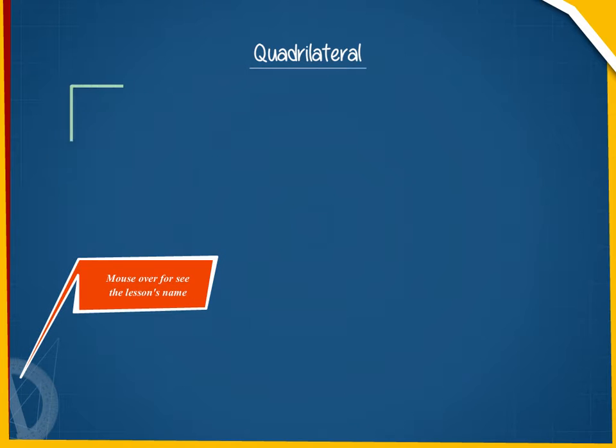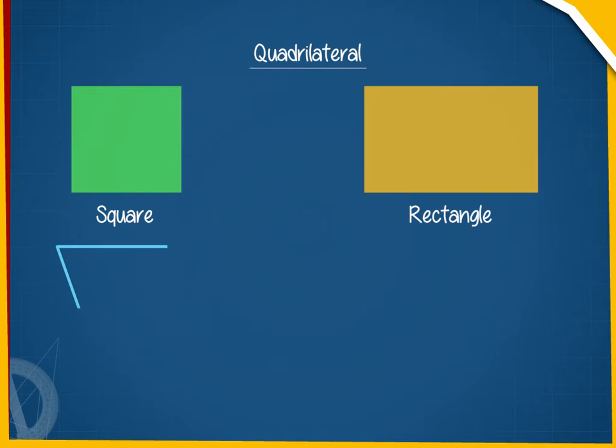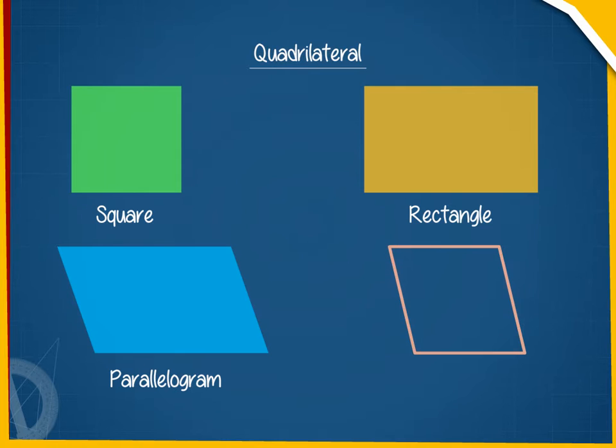Quadrilateral. A polygon can have three or more sides. On classification, we categorize a four-sided polygon as a quadrilateral.